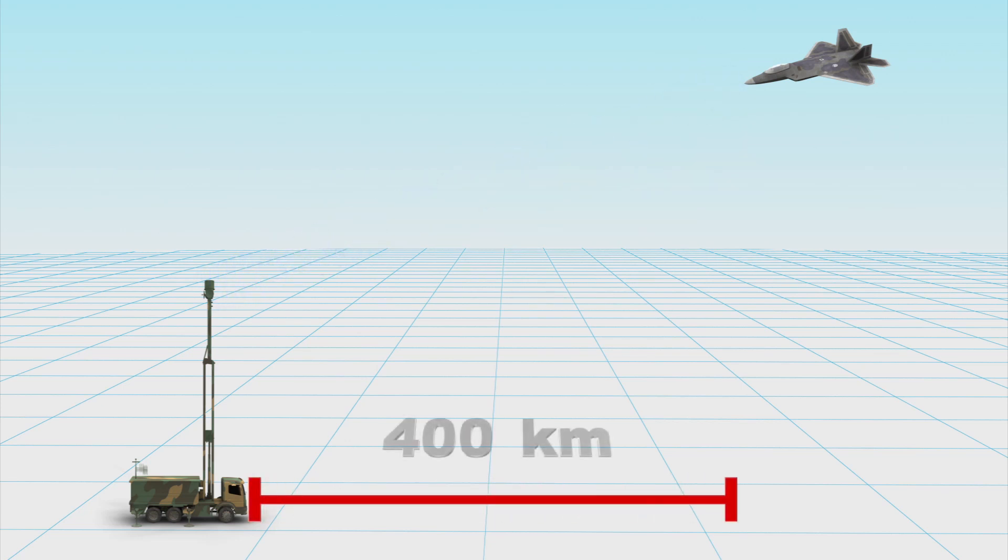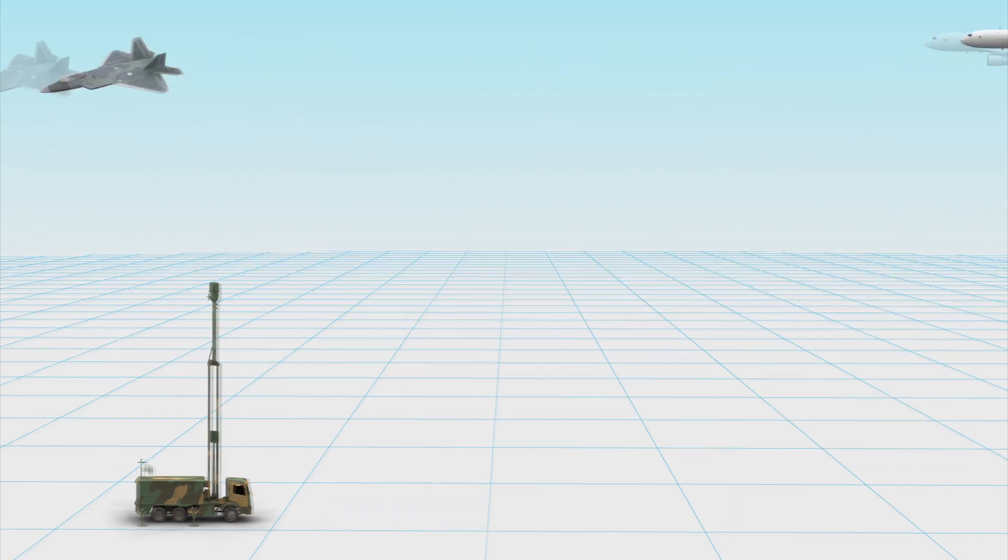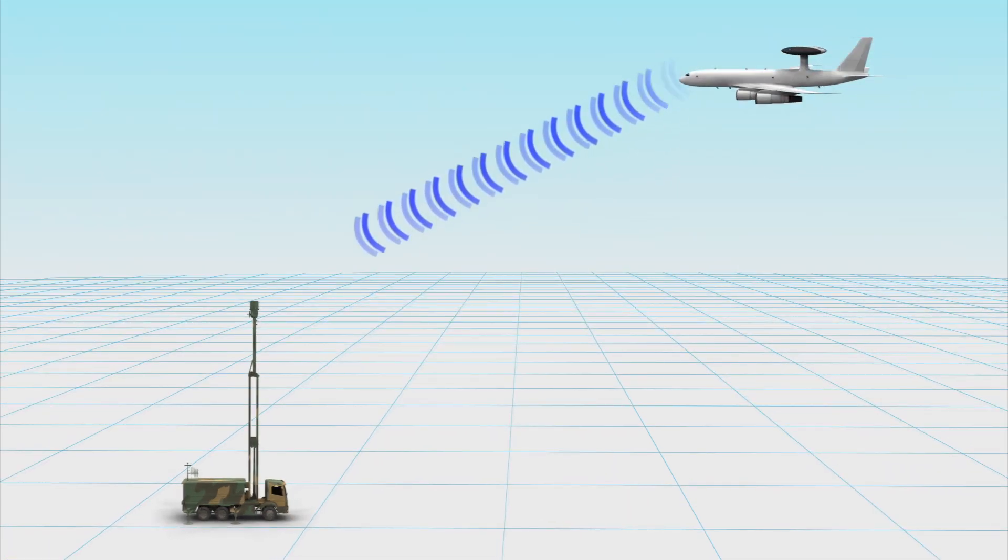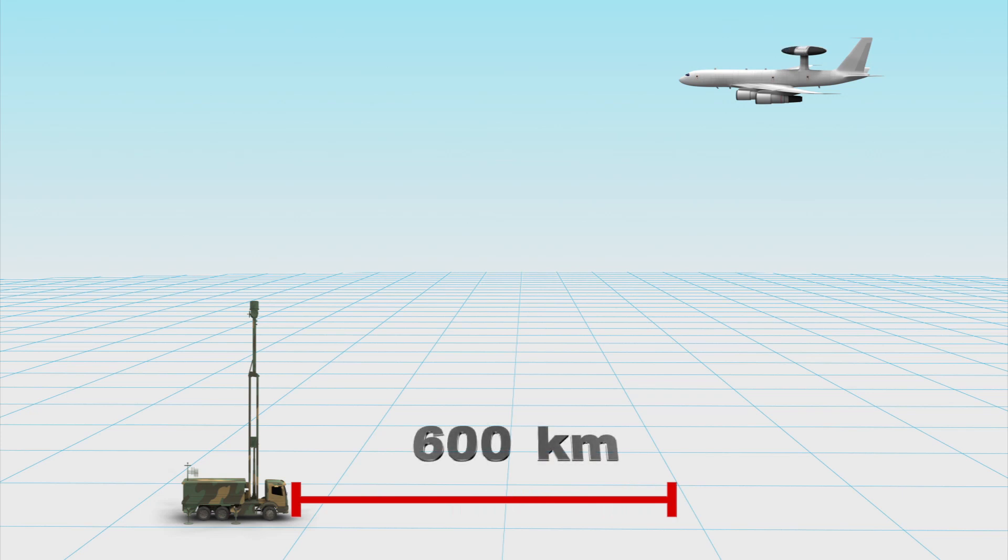It can allegedly detect fighter aircraft within 400 kilometers. For airborne early warning and control craft, the radar system can detect them at a range of up to 600 kilometers.